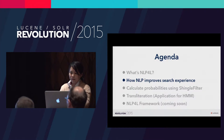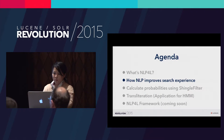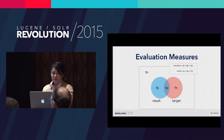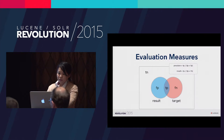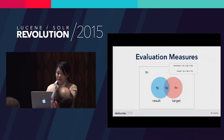Next, I'll explain how NLP4L improves search experience. We think it's important to know how NLP technologies can improve users' experience when they search. This is a basic IR diagram. You may know the two evaluation measures that are very popular in the IR field: precision and recall. The pink circle specifies your expectation when the query is made and is called a target set, because it is the target for the search engine.